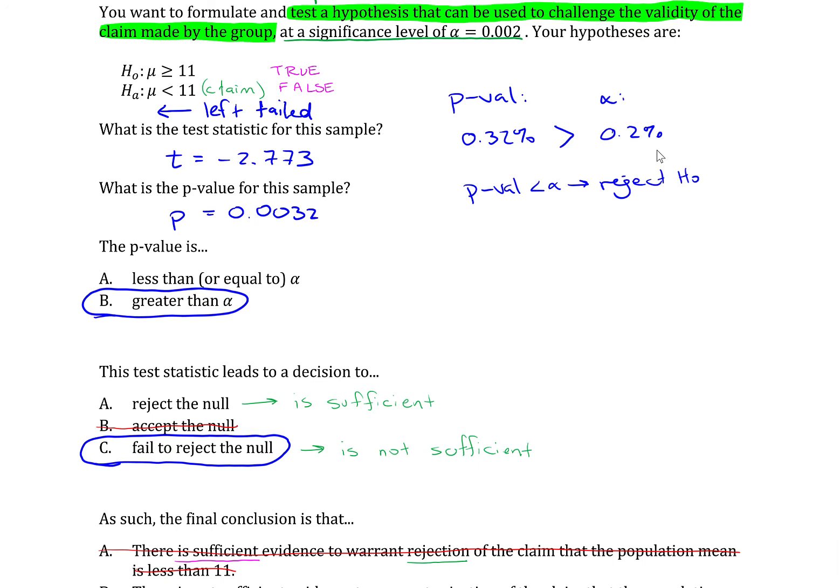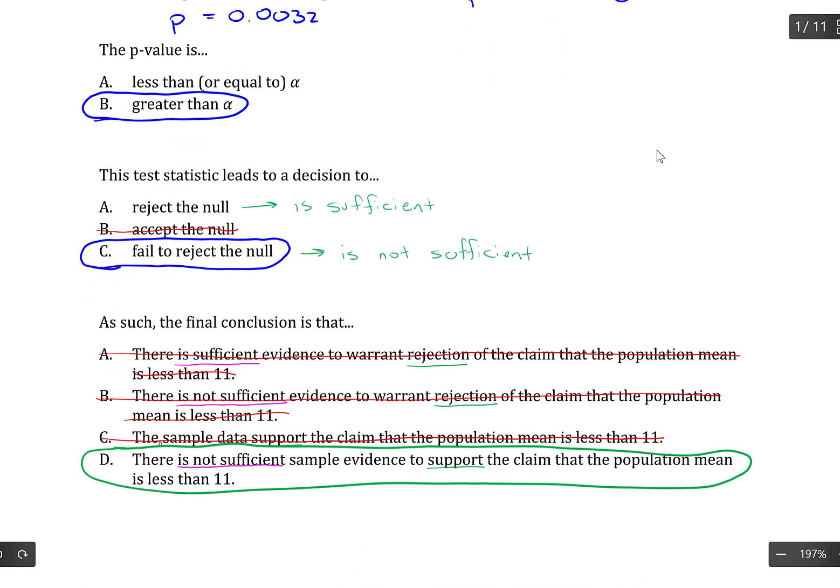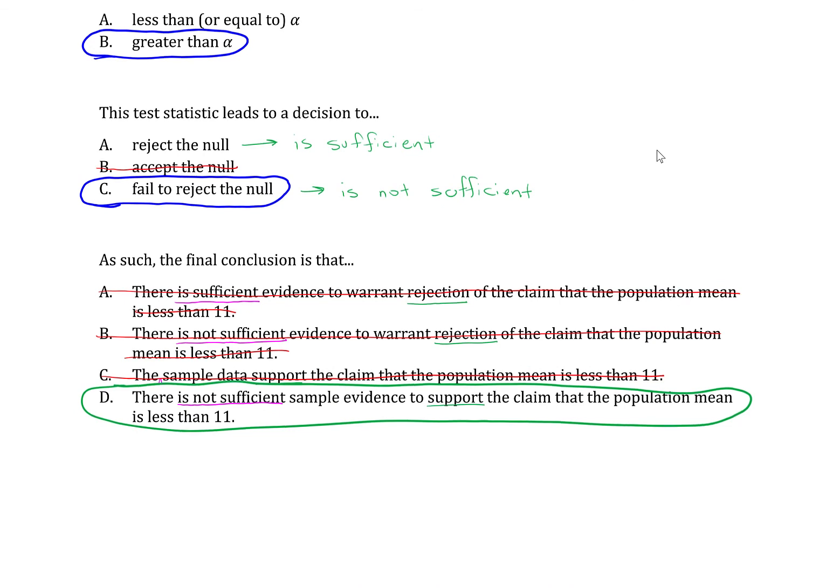So in stating that the alternative hypothesis is false, we're also stating that the claim is false. So if you come down to our statement, we said there is not sufficient evidence to support the claim that the population mean is less than 11. So there's not enough evidence to support something is implying or it's pointing in the direction of being false. So that's how the logic there works out.